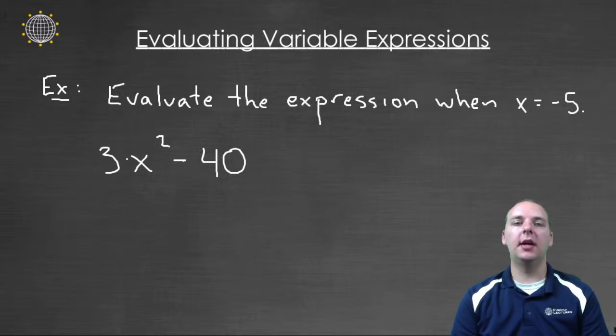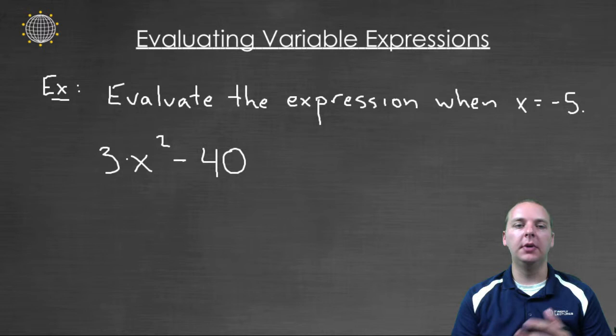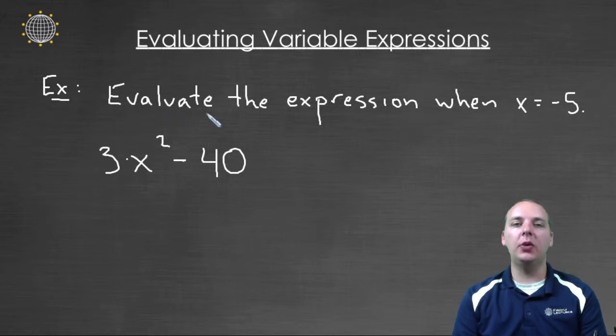A common exercise that you'll see a lot when you're first learning about expressions and variables is they'll ask you to evaluate a certain variable expression. So like in this example we have an expression 3x squared minus 40, and what they're going to ask us to do is evaluate this expression when x is a particular number, in this case negative 5.